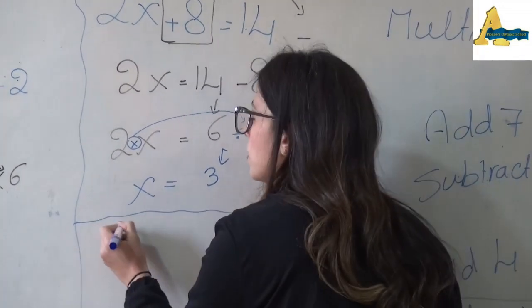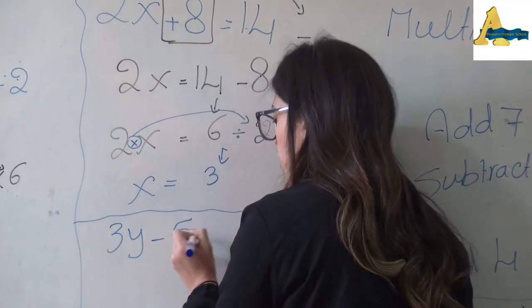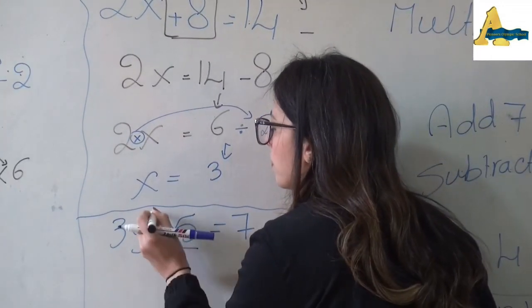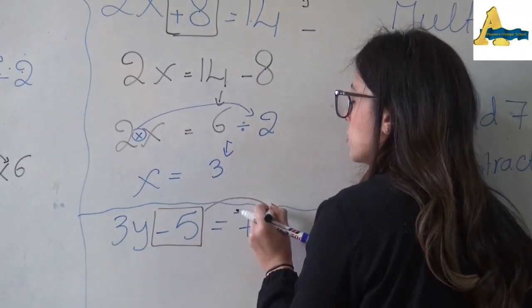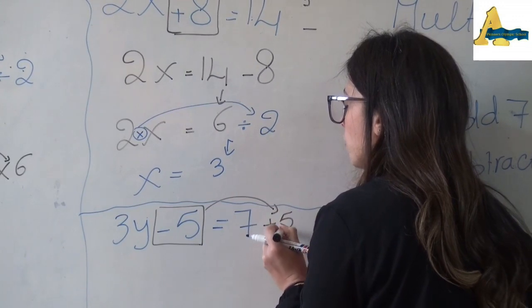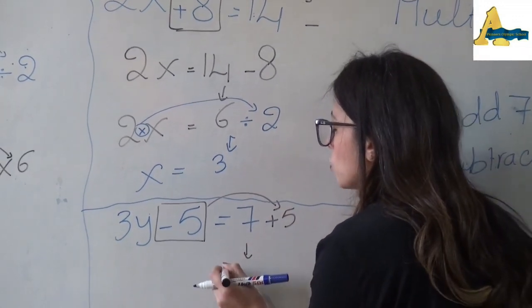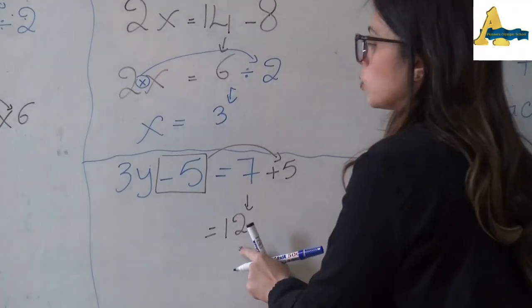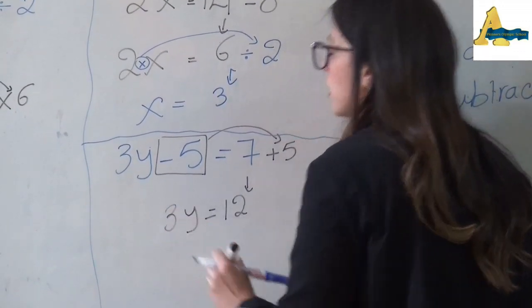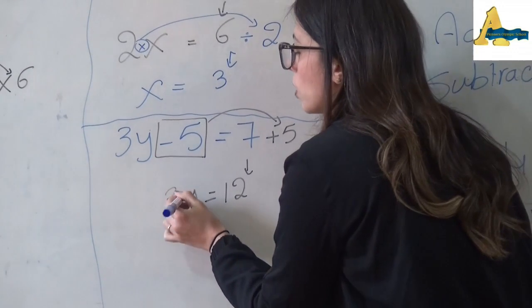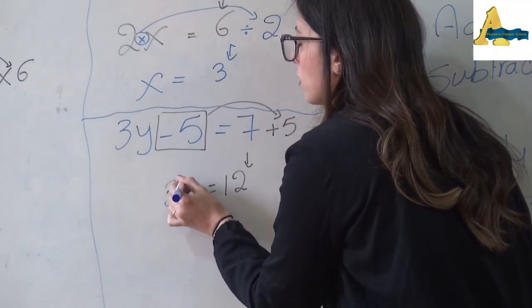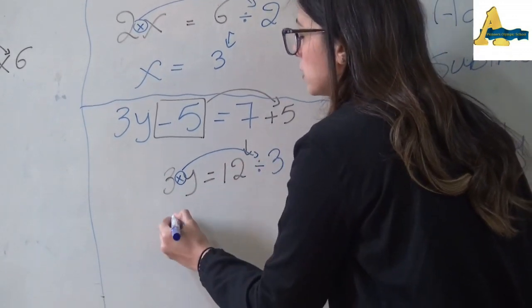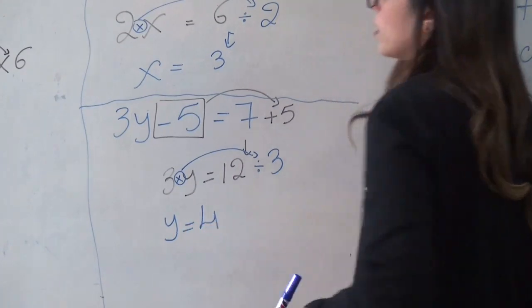Another example: 3y - 5 = 7. First, I start with the number without y. Minus 5 will go to the other side as plus 5. So 7 + 5 = 12, meaning 3y = 12. The sign between 3 and y is times, which goes to the other side as divided. 12 divided by 3 = 4, that means y = 4. Thank you.